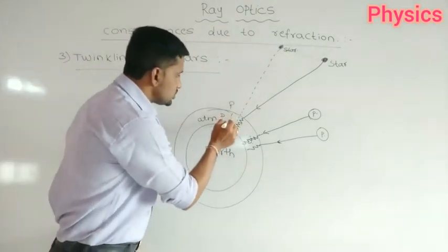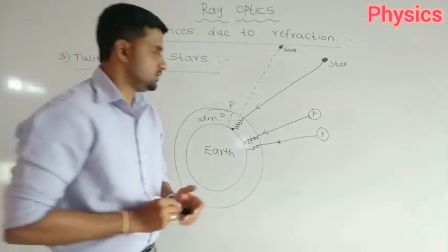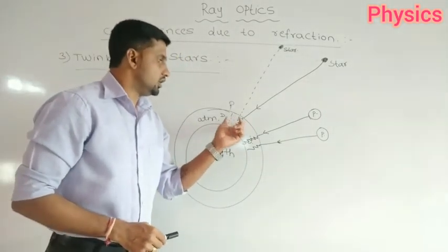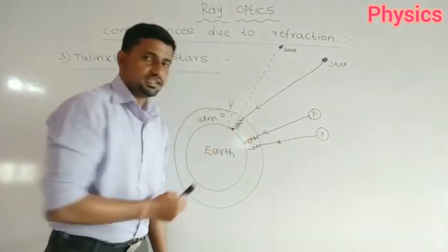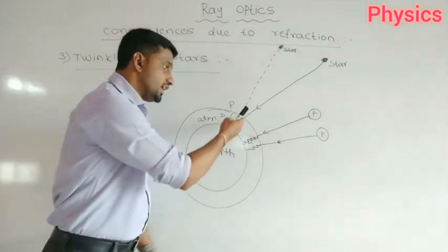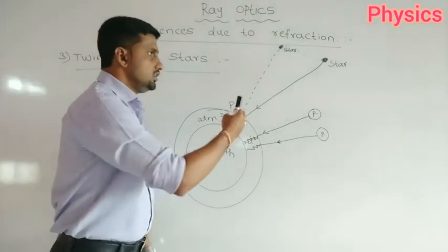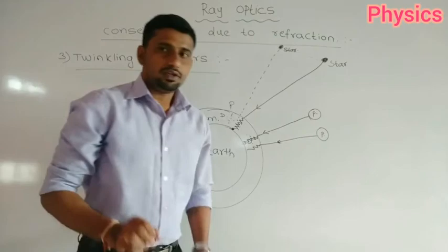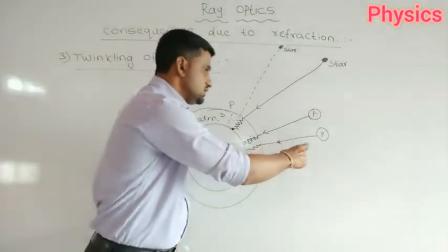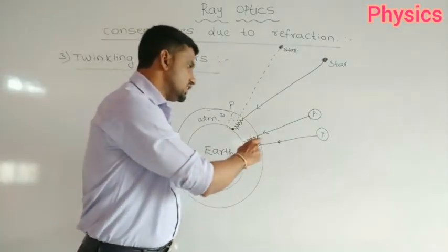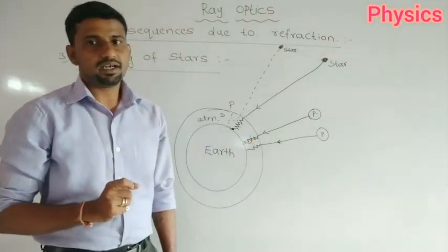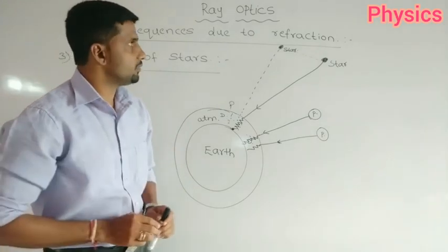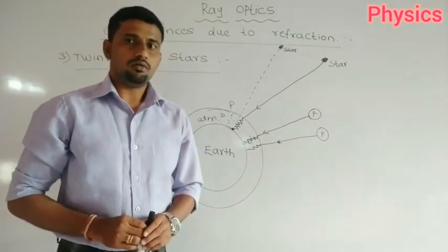If you come out from Earth's atmosphere and observe, stars will not appear to twinkle - the twinkling takes place only because of the atmosphere. When light from a star enters the atmosphere, refraction occurs due to changes in refractive index and density, and the intensity of light changes, causing twinkling. Planets do not twinkle because they have less distance from Earth compared to stars, and the intensity of light coming from planets does not change significantly.